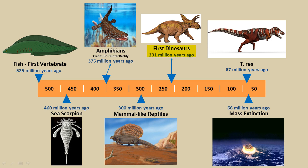231 million years ago, the dinosaurs first appear. If you take a look at T-Rex, he came about only 67 million years ago — right at the tail end of the time period during which the dinosaurs existed. So T-Rex was only around for about a million years before the mass extinction event. We'll dedicate an entire video to that, as there are many theories as to why the dinosaurs disappeared. One of the main theories is that a large asteroid wiped out the dinosaurs.